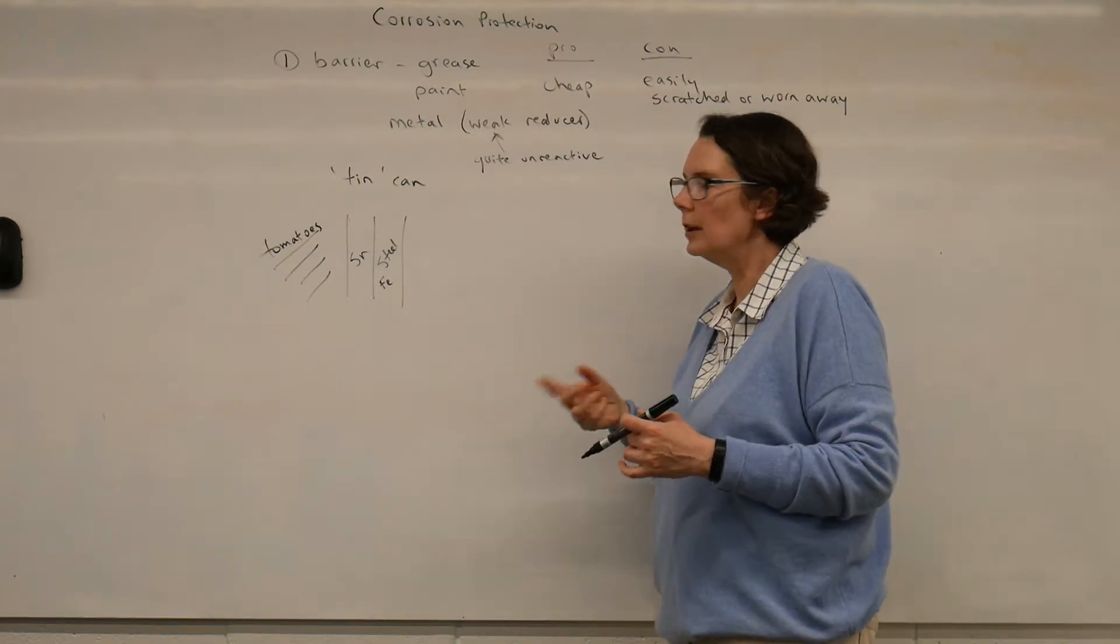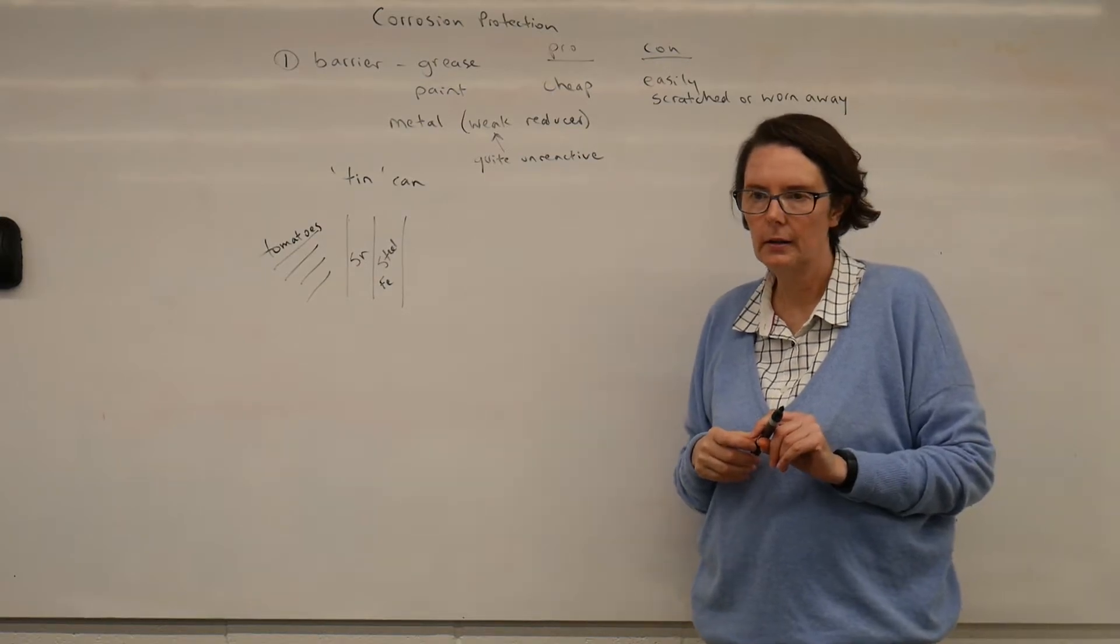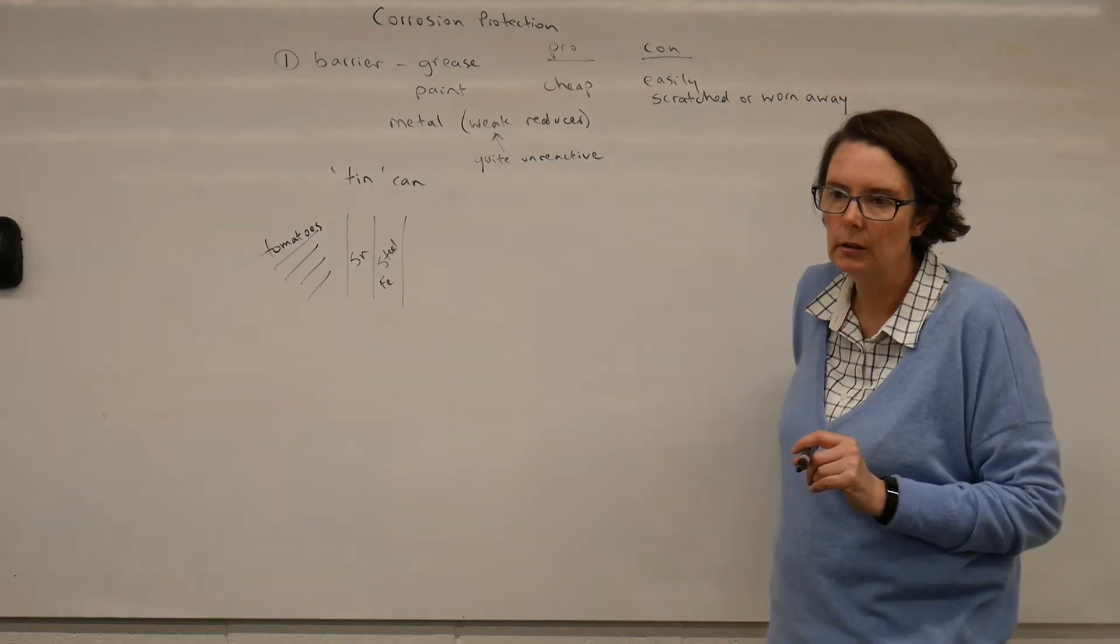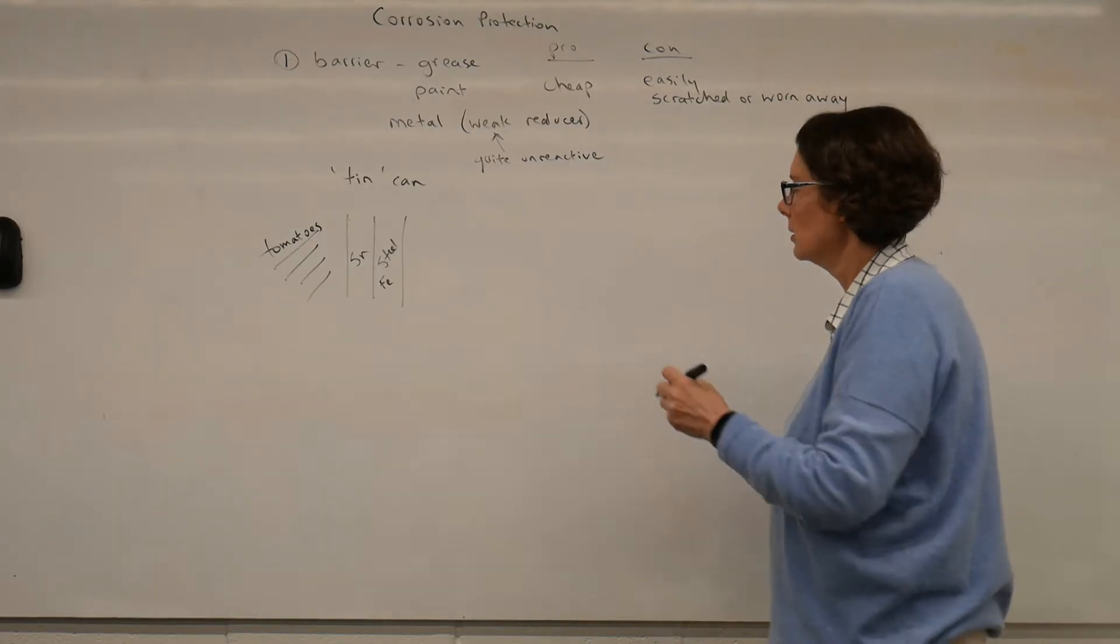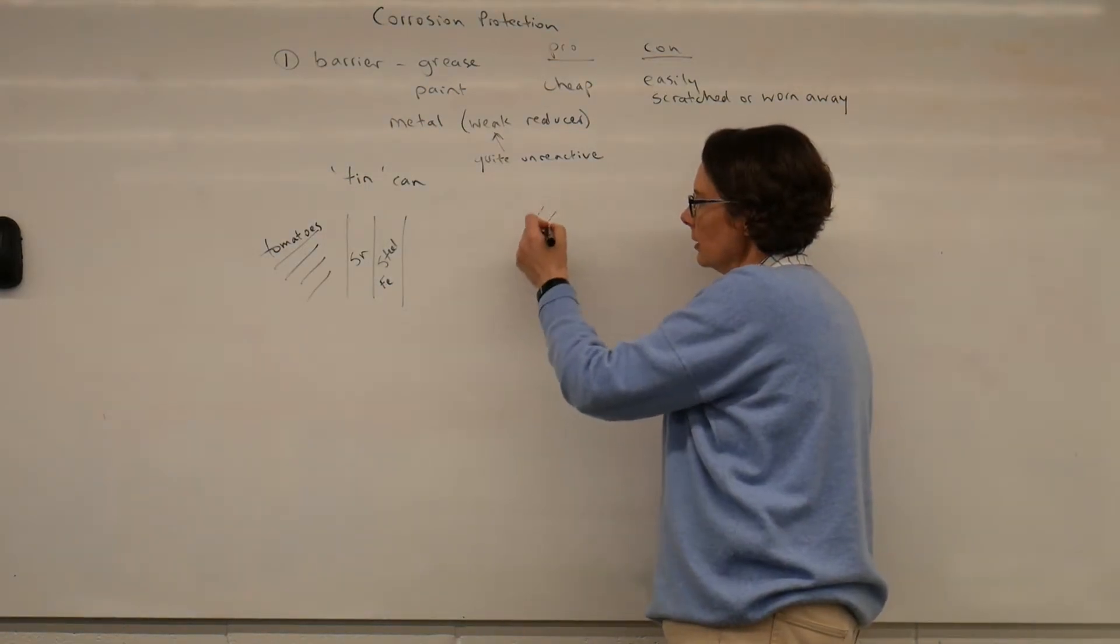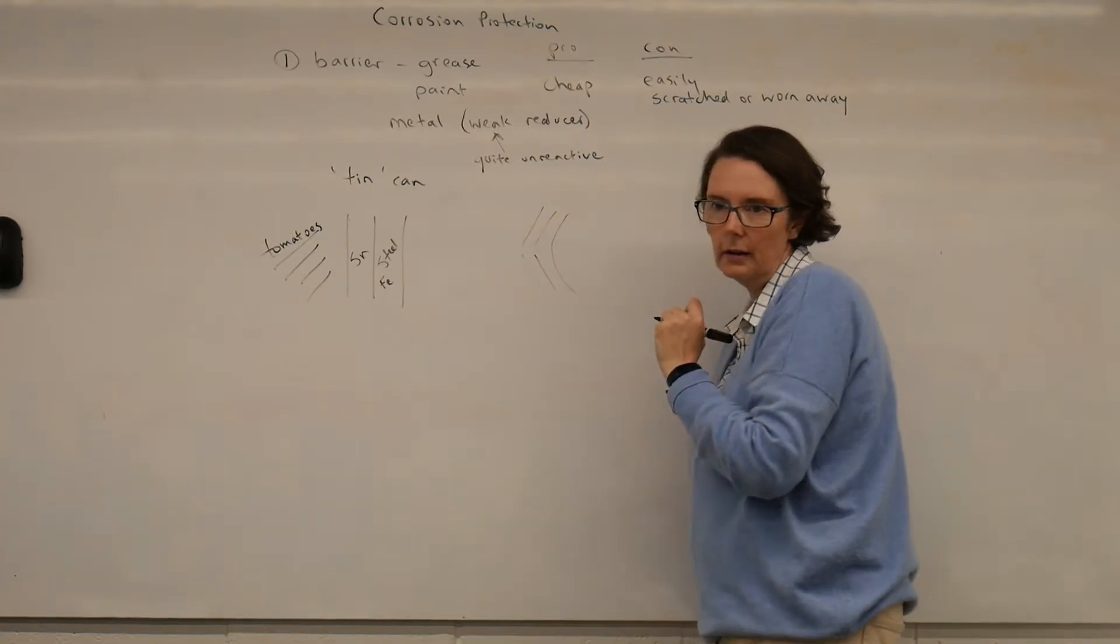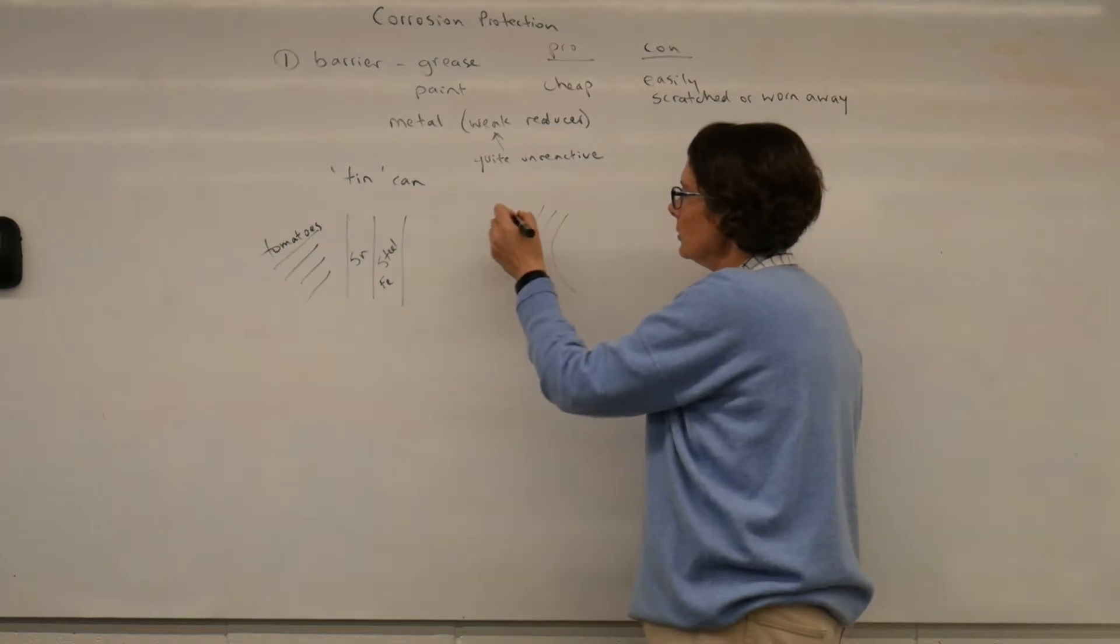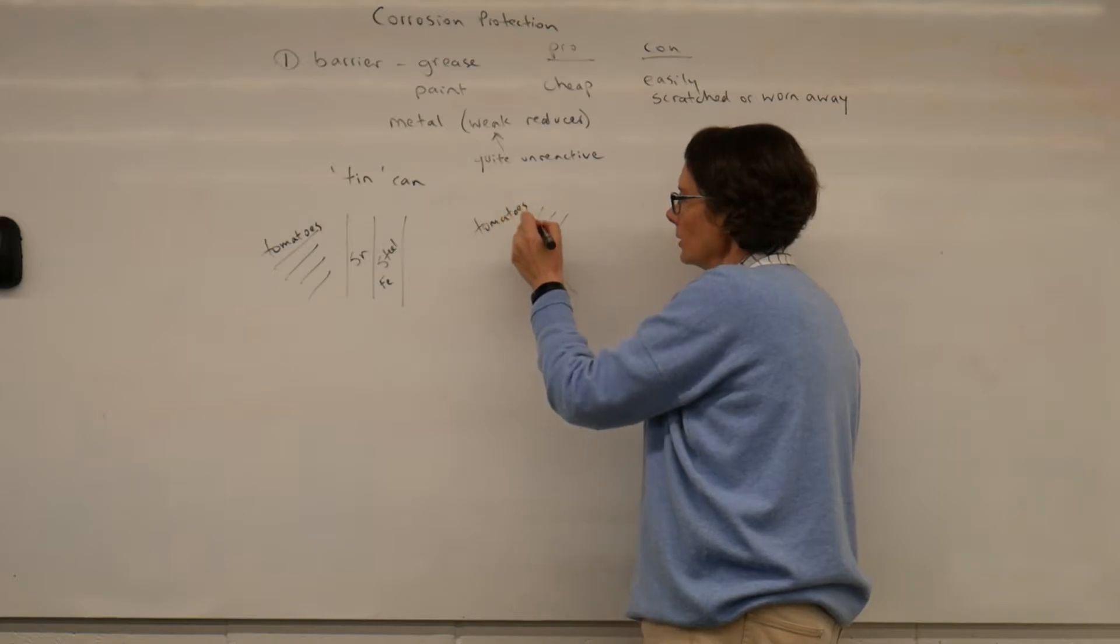Tell me, what do you think happens if there's a dent in the tin? What might happen if we dent the tin, Chris? Well, we'll create one of those stress points, so a reaction will happen faster there. Yeah, well, we could even potentially put a little crack... Potentially, yeah... in the tin lining, couldn't we? And if we do that, what's going to happen?